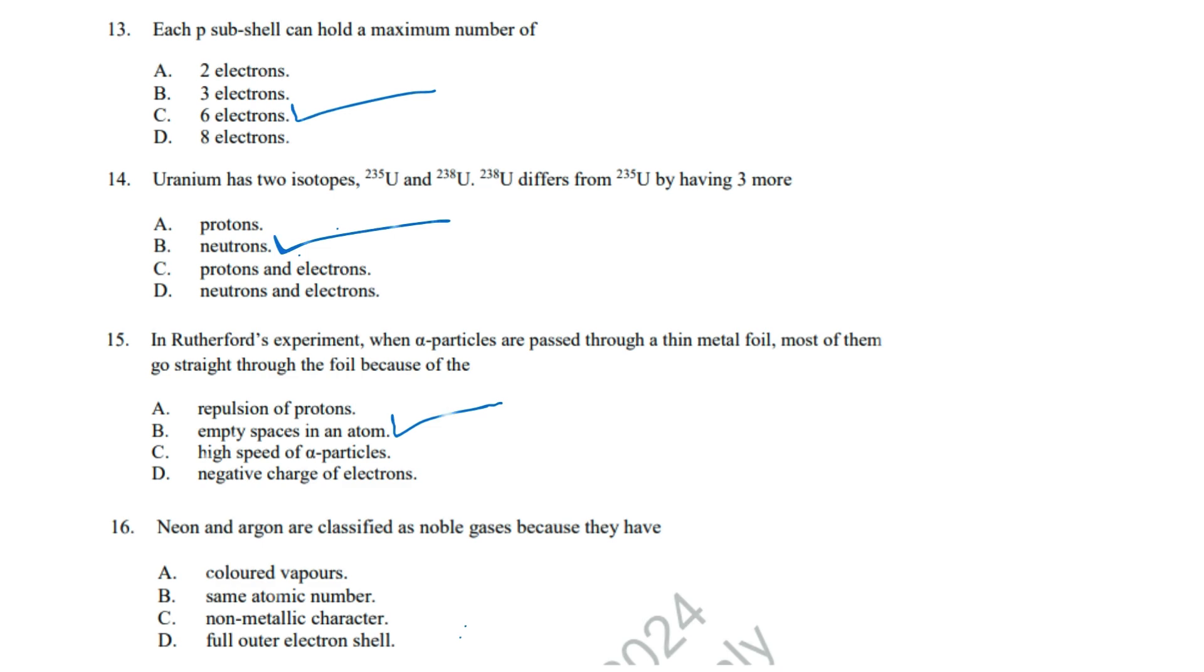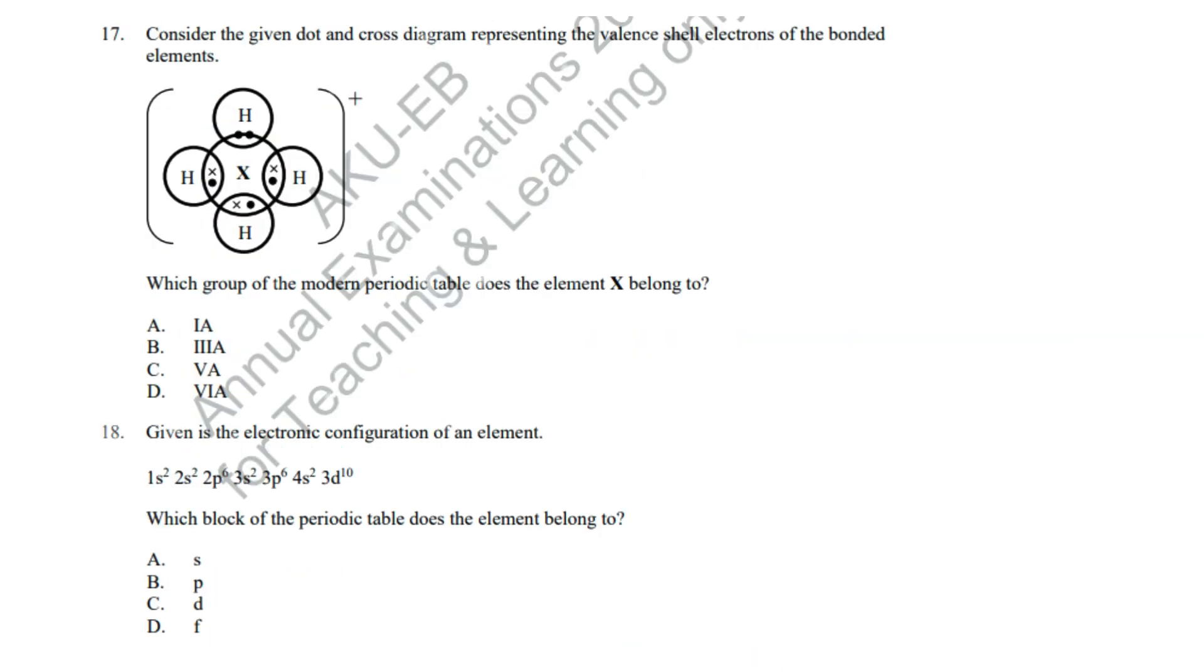Question 16: Noble gases are chemically stable due to a complete outer electron shell. Correct answer: D, Full outer electron shell. Question 17: The element forms 3 bonds, indicating it belongs to group VA. Correct answer: C, VA.